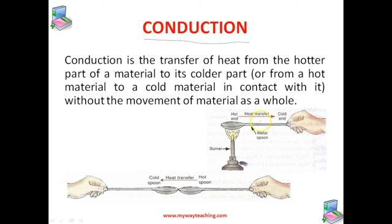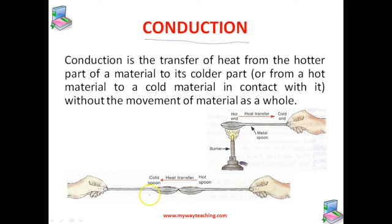This type of transfer we call heat transfer by conduction. In this case, the transfer of heat takes place within the same object — here we are considering only the spoon. Now if you bring the hot end of the spoon in contact with the cold end of another spoon, some of the heat of the hot spoon is transferred to the cold spoon, due to which the cold spoon will also become somewhat hot. This type of transfer of heat from a hot spoon to a cold spoon in contact is also called conduction.